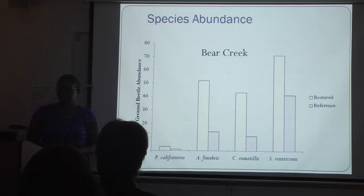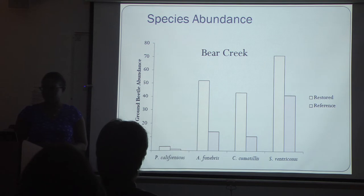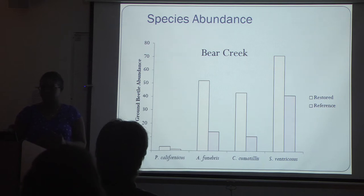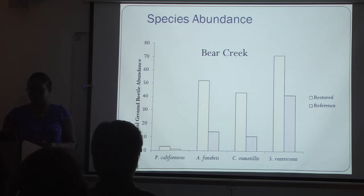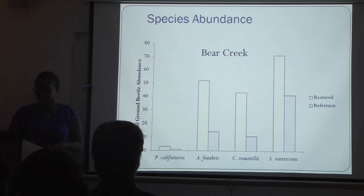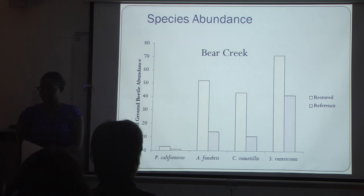The previous slide showed all of the sites combined together. If I look at the same data by site, I get a more detailed overview of the total beetles collected for one site. At Bear Creek, the total ground beetle abundance throughout the season showed a lot of beetles in restored sites for all four species. All four beetles had high abundances at the restored site. S. ventricosis at this particular site was also the most common species.